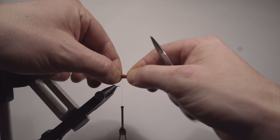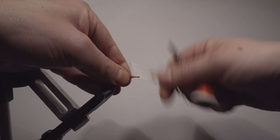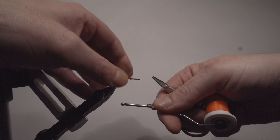Then just wrap the thread down again all the way to the same point. And now you can see you get a perfectly even tapered woolly bugger tail. You don't have to do anything really.